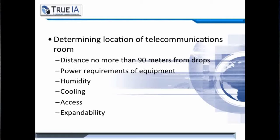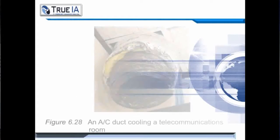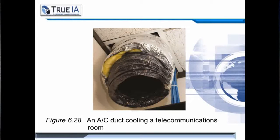Next, we need to determine the location of the telecommunications room. Remember, the distance can be no more than 90 meters from your drops. You also have to take into consideration the power requirements for the equipment in the telecommunications room, the humidity and cooling requirements, and who requires access to it.